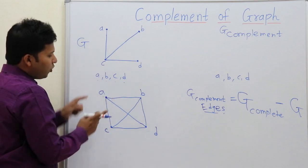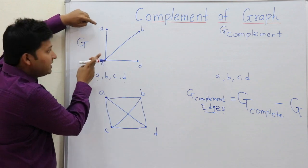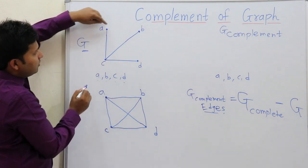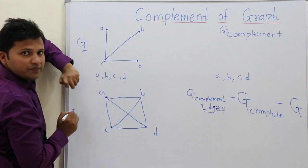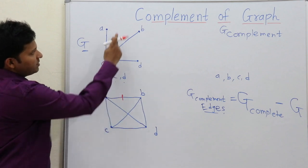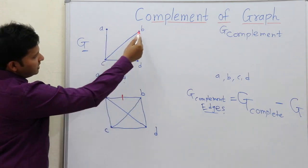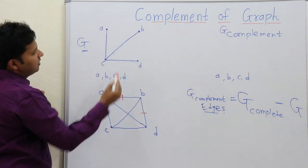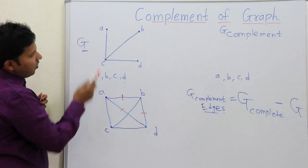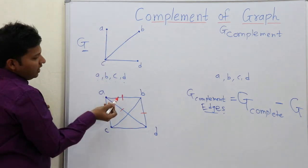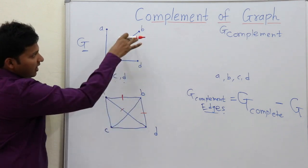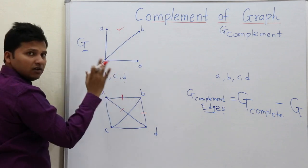Now in this complete graph, let us mark what edges are missing in the original graph to make it a complete graph. Let us check for the edges. Edge A-B is absent here. Then B-D is absent. A-D is also absent. All other edges are present. Means if we add AB, BD, and AD to this graph, then this graph will also become a complete graph.